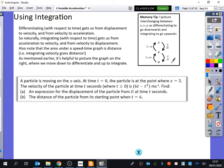Because differentiating with respect to time gets us from displacement to velocity and from velocity to acceleration, naturally integrating, which is anti-differentiation, will get us from acceleration to velocity and from velocity to displacement. Whenever I see students who have been successful at this topic, normally they jot that down at the top of the page just to remind them down is differentiate, up is integrate. It's helpful to picture this graph on the right where we move down to differentiate and up to integrate.